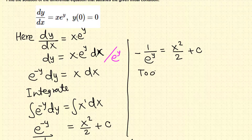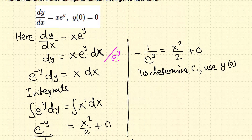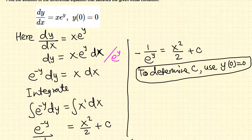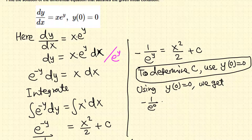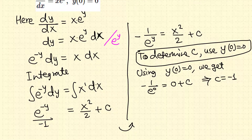To determine c, use the initial condition y(0) equals 0. With y equal to 0 and x equal to 0, we get negative 1 over e raised to 0 equals 0 squared over 2 plus c. Since e raised to 0 is 1, we get negative 1 over 1 equals 0 plus c, so c equals negative 1.